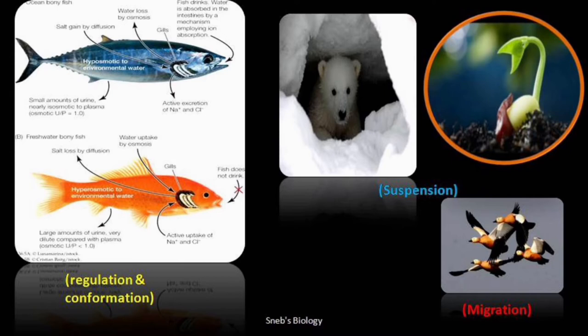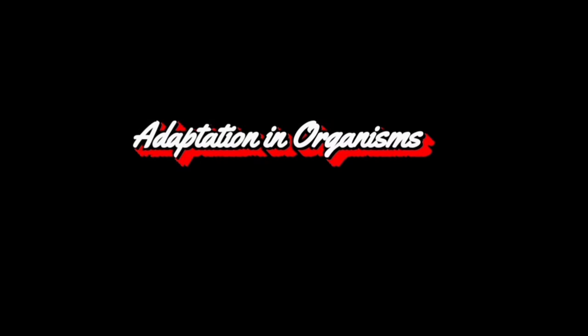In the last part we saw various ways in which living organisms respond to abiotic conditions — responses like to regulate or to conform. We also talked of some organisms that migrate and some that suspend their metabolic activities to cope with abiotic conditions. Whether it is regulation, migration, or conformation, these are actually adaptations, and because of these adaptations organisms are able to respond to abiotic conditions.